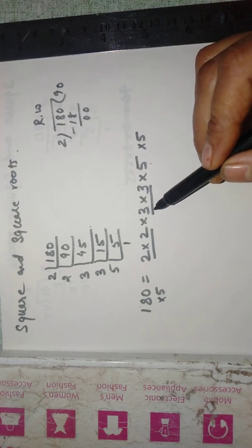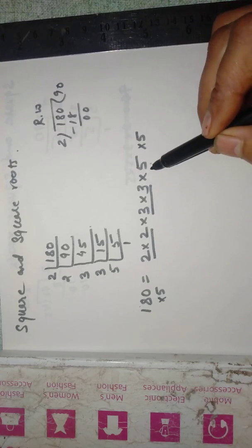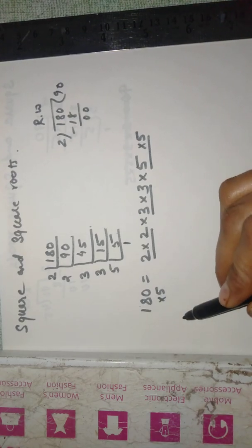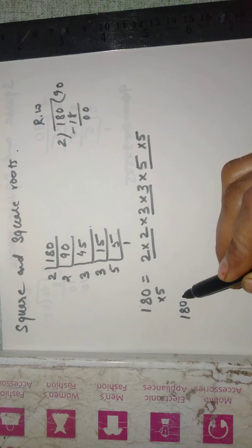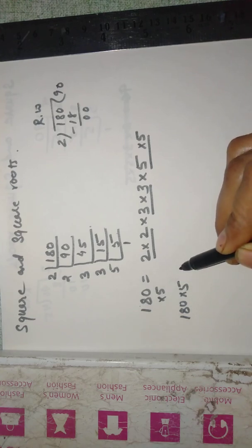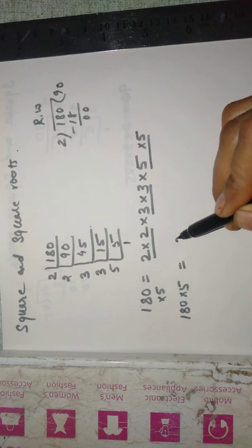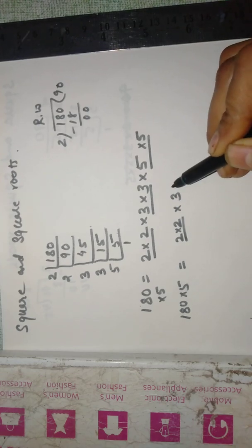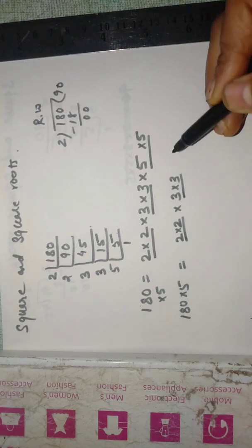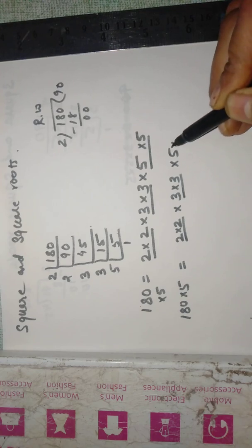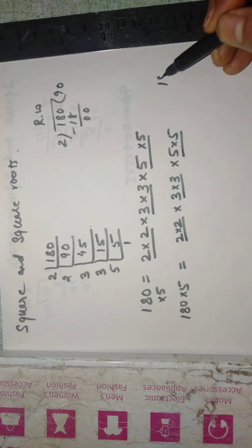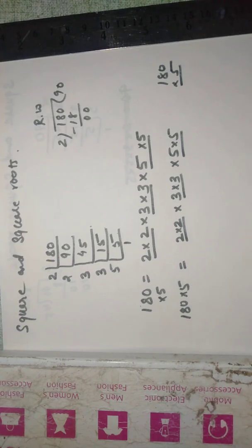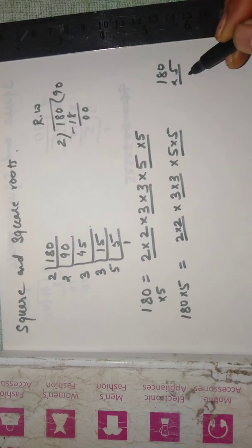2 into 2 is in pair. Factor of 3 is also in pair. And 5 is also becoming in pair. So 180 into 5 is giving this as the product of its factors in pair.